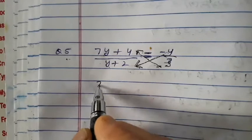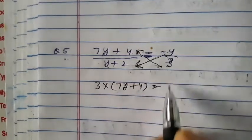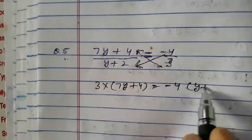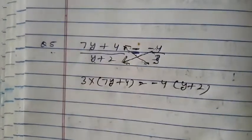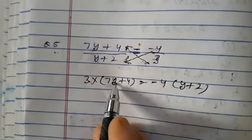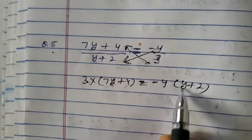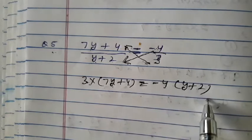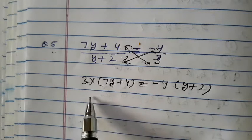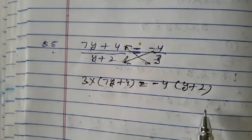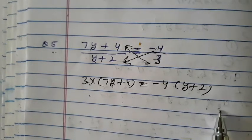3 is multiplied by the left expression: 3 into 7y, and then 3 into 4. On the right side, minus 4 is multiplied by y, and then minus 4 is multiplied by 2. Now there are two variables — one on the left hand side and one on the right hand side — and two constants, one on each side.